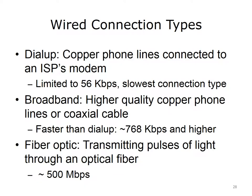Existing wired connection technologies are dial-up, broadband, and fiber-optic connections. Dial-up connections use copper phone lines to connect to an ISP's modem, with a speed limited to 56 kilobits per second — the slowest way of connecting to the Internet. Broadband connections have higher-quality copper phone lines, perhaps even coaxial cable, and run at approximately 768 kilobits per second or higher. Fiber-optic communications transmit information by sending pulses of light through an optical fiber, with a speed range of around 500 megabits per second.